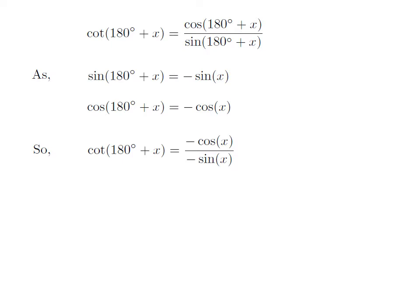Let us apply the above identities in the expression of cot(180° + x). So, cot(180° + x) is equal to minus cosine of x divided by minus sine of x. Since minus in the numerator and minus in the denominator cancel out, cot(180° + x) is equal to cosine of x divided by sine of x, which is equal to cot x.